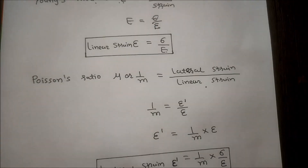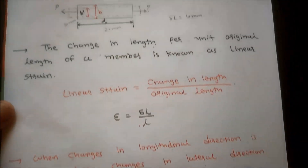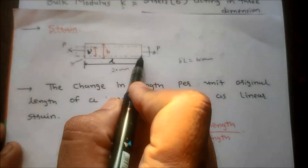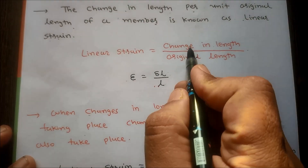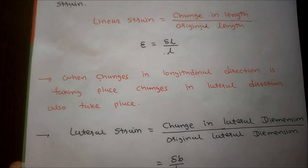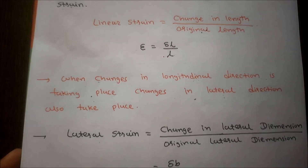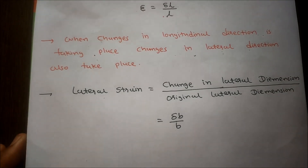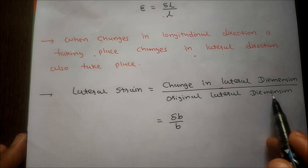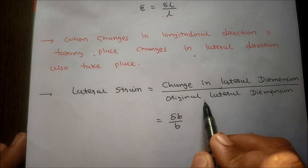Next is Poisson's Ratio. Poisson's Ratio is defined as the ratio of lateral strain to linear strain. Strain means: if we consider one bar and apply a tensile force, the length of this element changes. The change in length per unit original length is known as linear strain — that is, change in length divided by original length. When change in the longitudinal direction takes place, change in the lateral direction also takes place. Lateral strain is change in lateral dimension divided by original lateral dimension — that is delta B by B, delta T by T, or delta D by D.